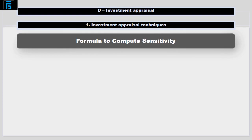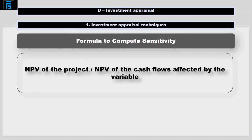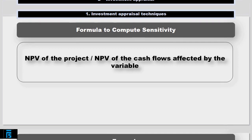In more general terms, we can calculate the percentage sensitivity as follows: NPV of the project divided by NPV of the cash flows affected by the variable.